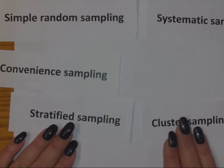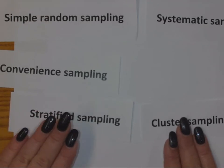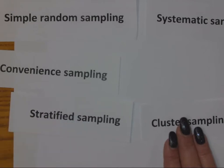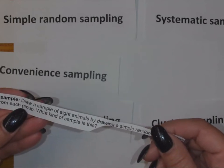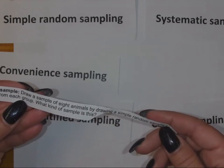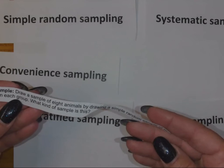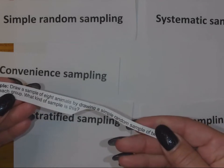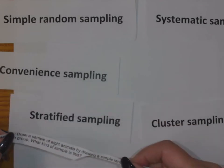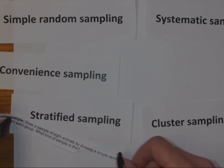Remember, cluster was pick a cluster and do a census on it, several groups and do the census on it. Stratified is do all of your groups and pick a certain number or a certain percentage out of there. Since I'm doing each group, every group, and I want to do two out of every group, that means it's stratified.